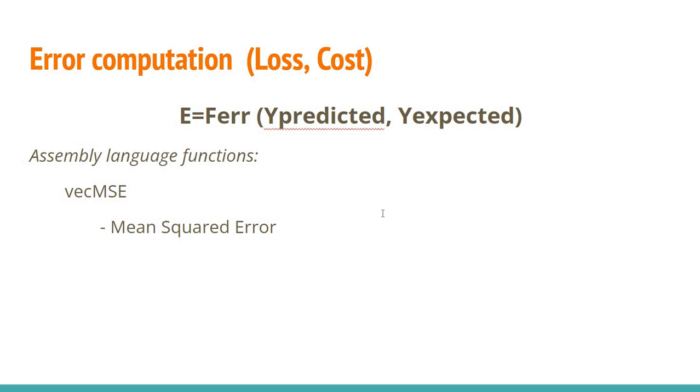And again, I've already discussed about the mean squared error. I have a video about implementing mean squared error using vectors. So again, this is something that I've already implemented and MSE is again a common loss function in neural networks.